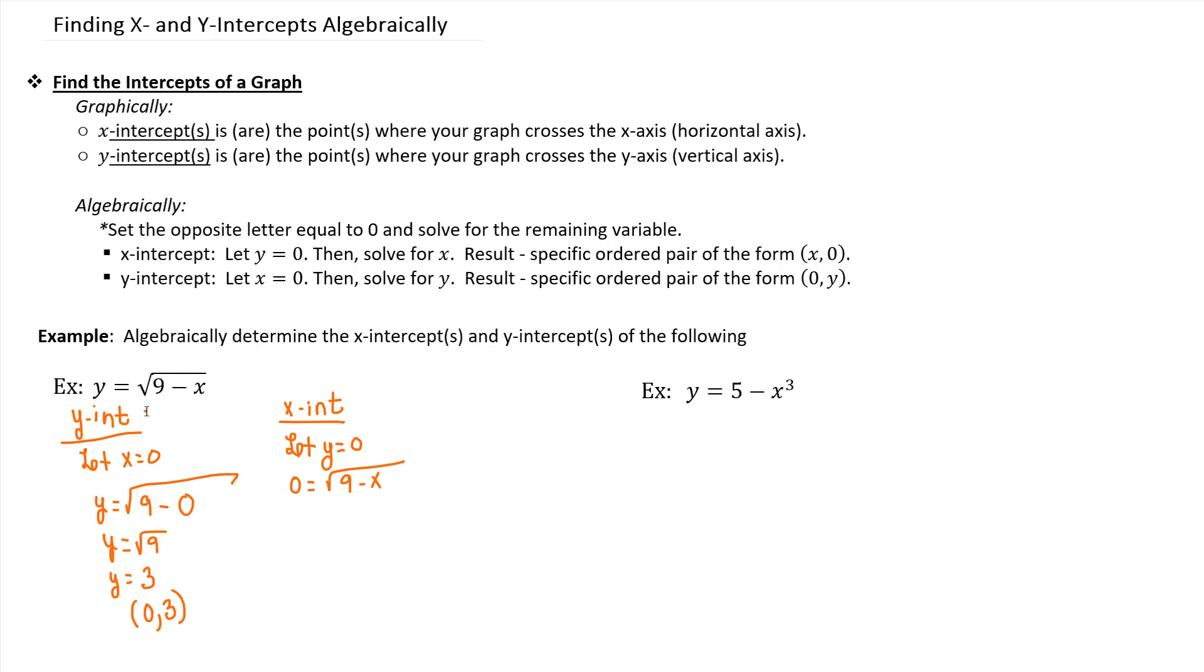In order to solve for x, we can see that x is under a square root. So we need to get rid of the square root. And the way we do that is by squaring both sides. Do the same thing to both sides of the equation. 0 squared is still 0. Squaring a square root undoes the square root and just leaves you the 9 minus x.